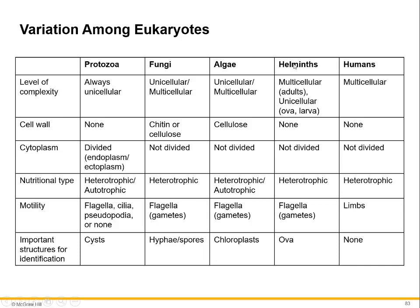The absence of helminth infections may actually contribute to autoimmunity and allergies — it's one of those things where you develop immunity to these organisms early on. To summarize the variation of eukaryotes, the chapter covers protozoans, algae, fungi, and helminths in terms of level of complexity, presence of a cell wall, cytoplasm division, nutritional type (heterotroph or autotroph), motility, and important structures for identification — such as chloroplasts and pigmentation for algae, types of spores for fungi, modes of motility for protozoans, and shape and segmentation for helminths.